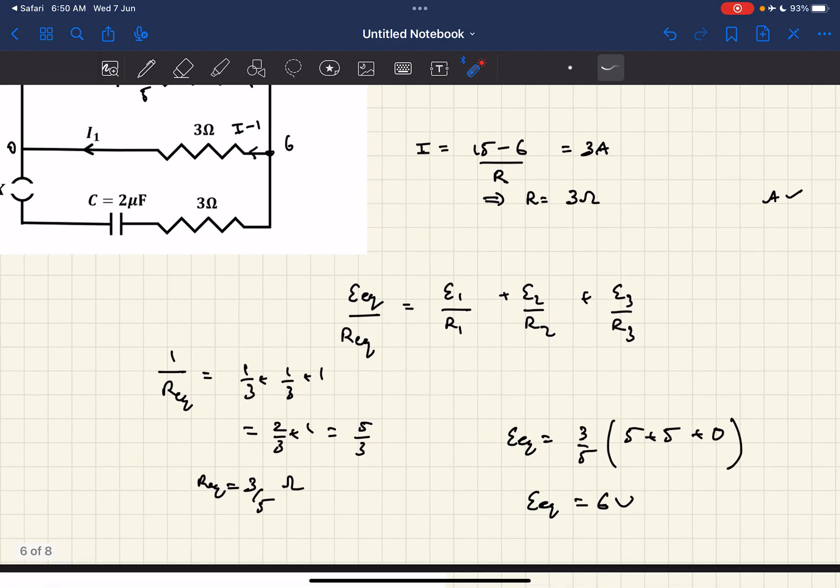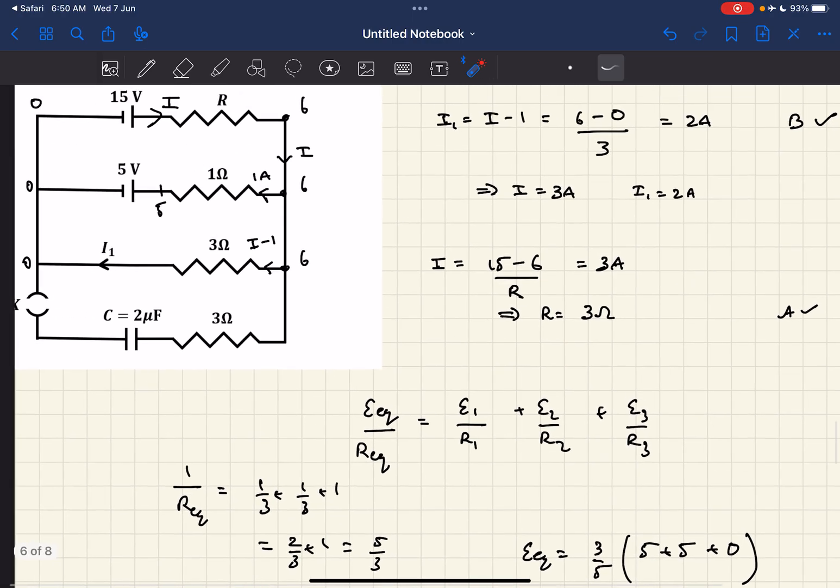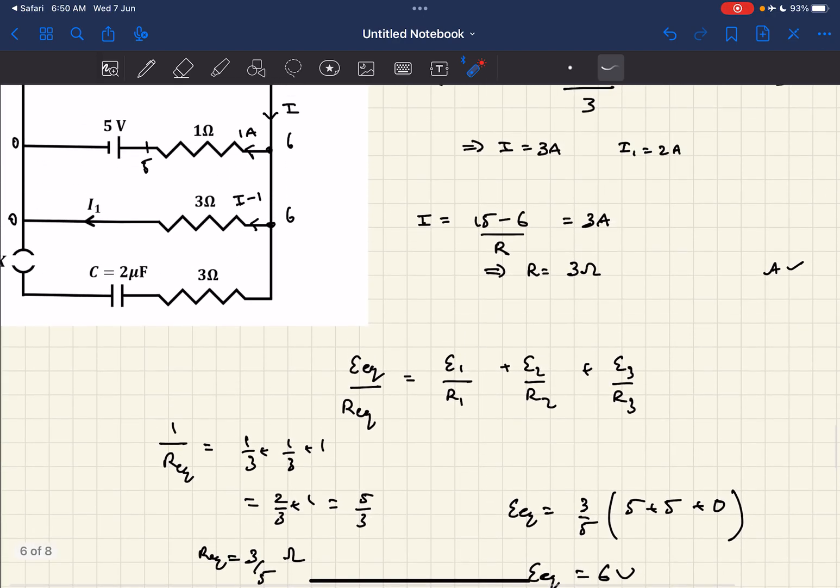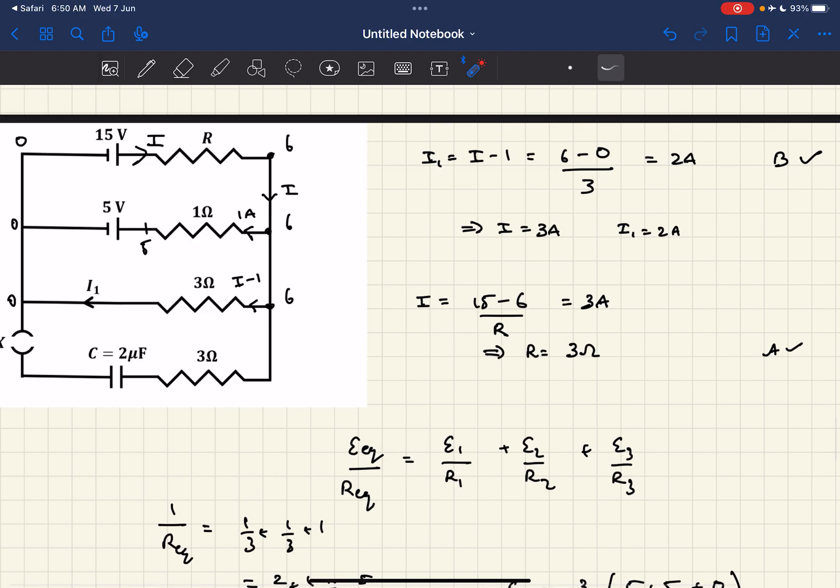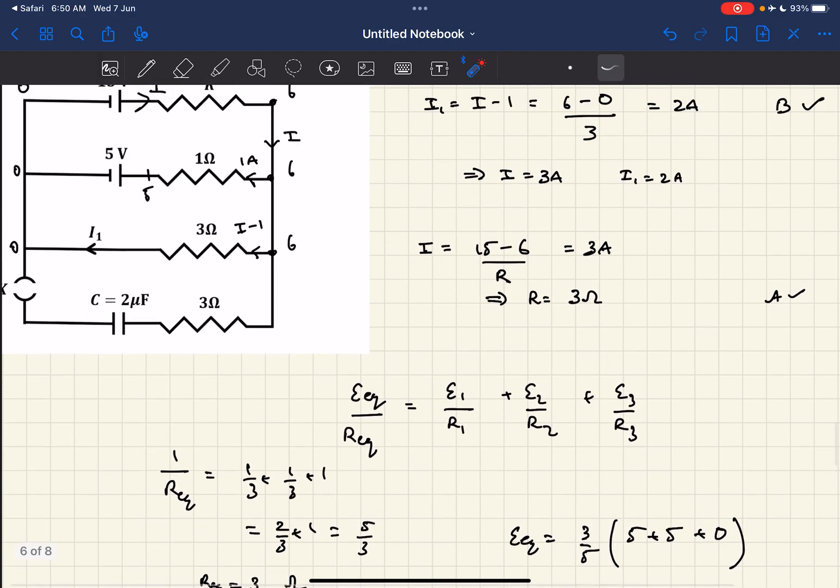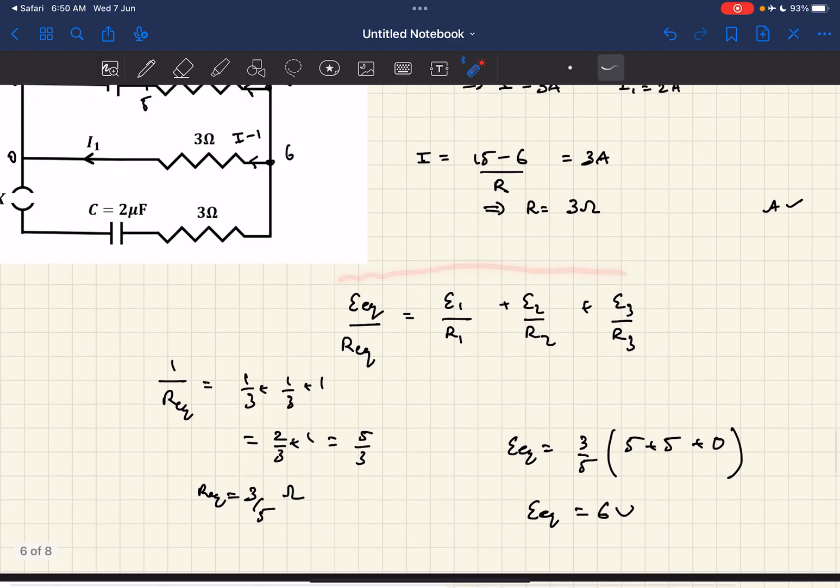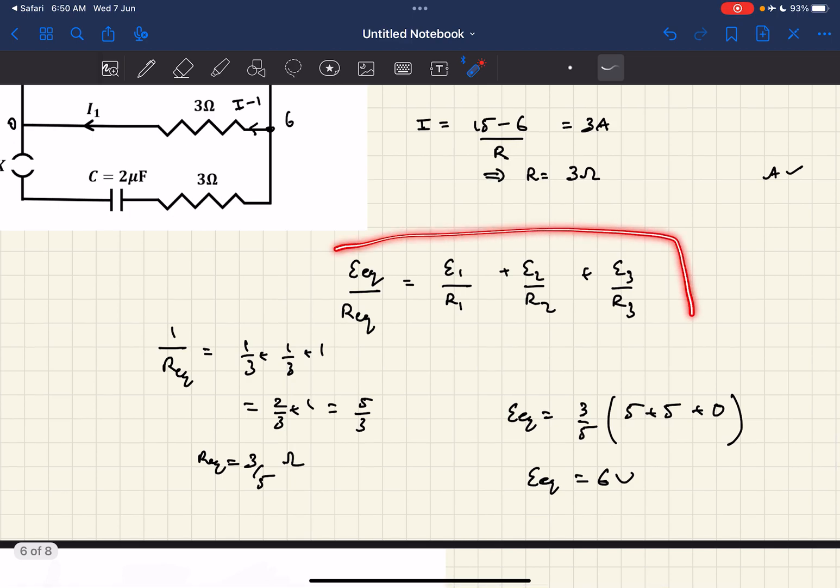After this point of time, t greater than t naught, the key is closed, which means now branch 4 is in the picture. What I'm doing in this step is simplifying this circuit. We can simplify the top three branches as one battery and one resistor using the parallel cell formula for equivalent circuits.